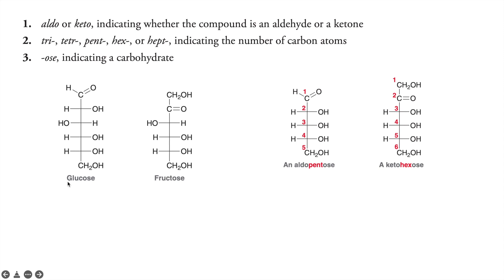Sugar components containing aldehyde groups are called aldoses. For example, in glucose there is an aldehyde group present, so glucose is an aldose. Fructose contains a carbonyl group, so fructose is a ketose. We also use prefixes like tri, tetra, penta, hexa, or hepta to represent the number of carbons present.